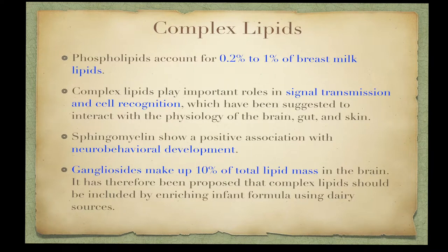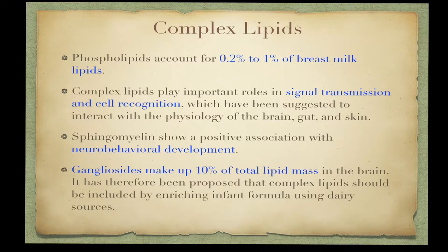Mammalian milk contains complex lipids including plasmalogens, glycerophospholipids, sphingophospholipids including ceramides, and gangliosides. Complex lipids play important roles in signal transmission and cell recognition. Results of a randomized trial of sphingomyelin-enriched formula showed a positive association with neurobehavioral development of low birth weight infants. Gangliosides make up 10 percent of total lipid mass in the brain and are highly concentrated in the cerebral cortex. It has therefore been proposed that complex lipids should be included by enriching infant formula using dairy sources.